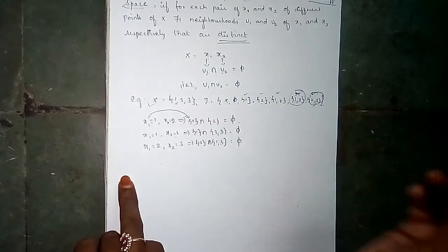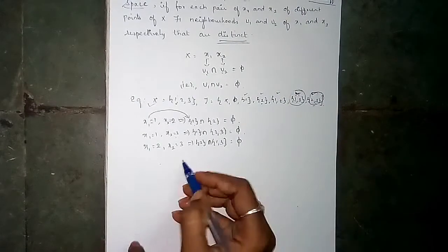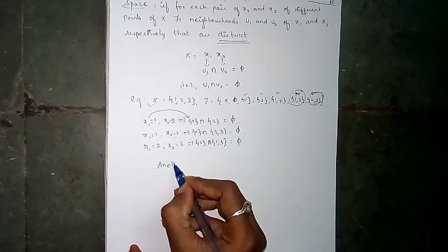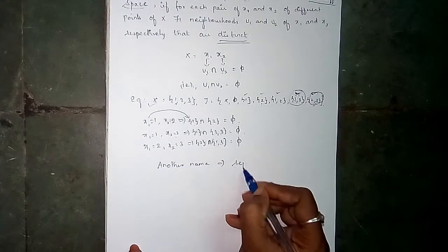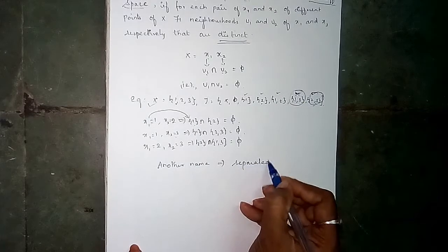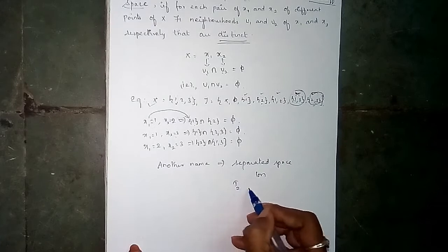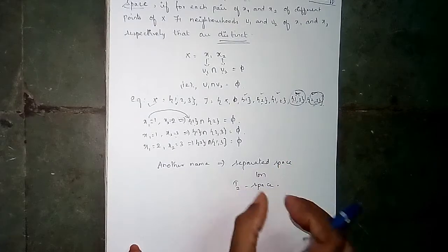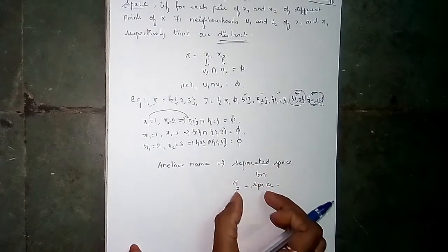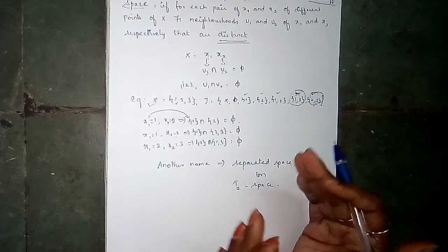We see another name as Hausdorff space. Hausdorff space is also called T2 space. Hausdorff space is separated space. This is separated space.